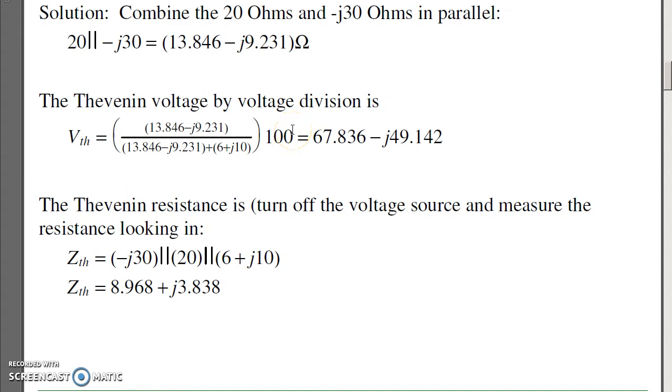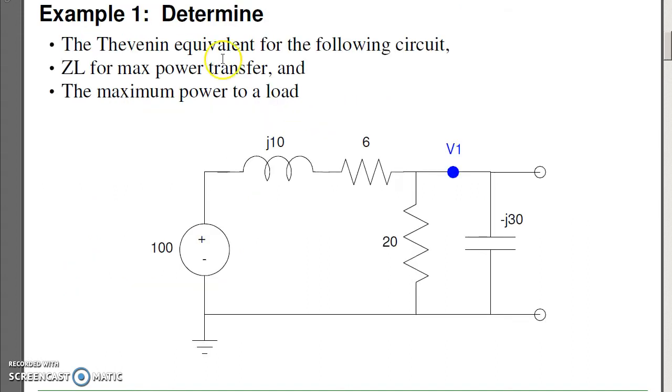To find the Thevenin impedance, what you do is you turn off the source, and then analyze. Looking in, I see 6 plus j10 to ground, and parallel with 20 ohms to ground, and parallel with minus j30 ohms to ground.